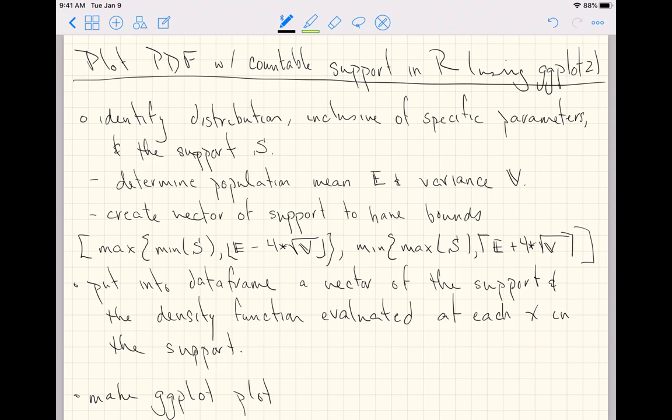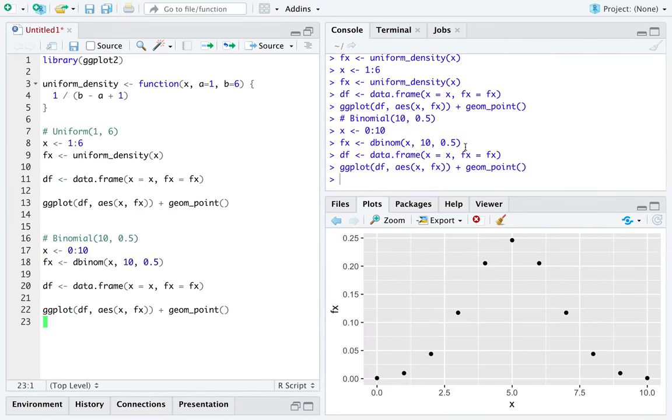Once you have the endpoints, the bounds of the vector of support, you can create a sequence from the lower bound to the upper bound. We will put that vector of the support into a data frame alongside a column of the density function evaluated at each x in the bounds of the support we have specified above. And then we'll make our plot in ggplot. Let's dive into R and give this a go.